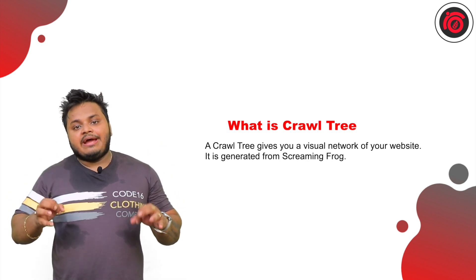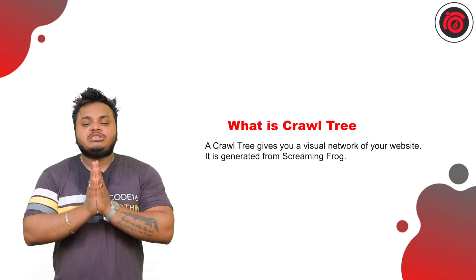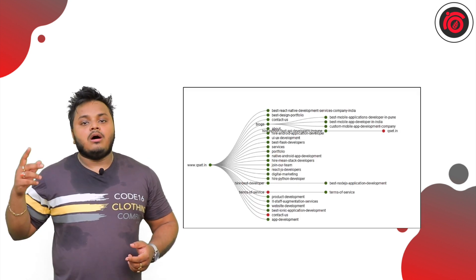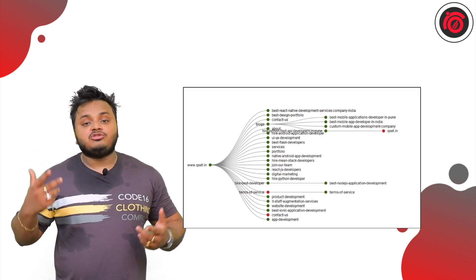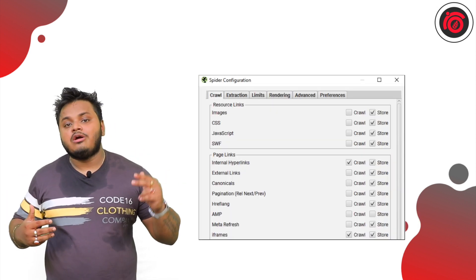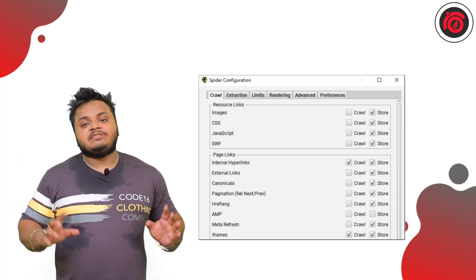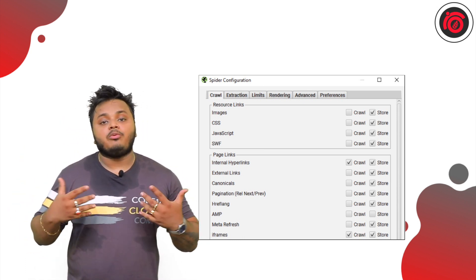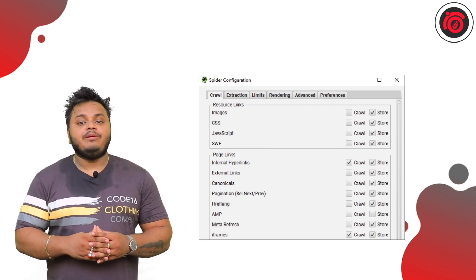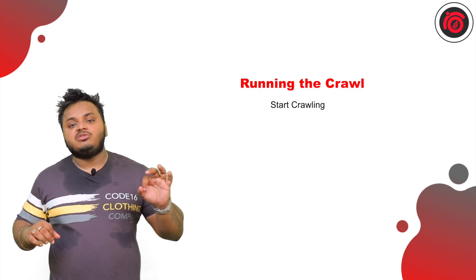In a nutshell, visualizing your entire site's architecture is a crawl tree, which can be seen from recommended software such as Sitebulb. This can also be seen from SEMrush, but my favorite tool is Screaming Frog SEO Spider. I'm going to walk you through some of the steps you can incorporate for identifying the crawl tree benefits and issues as well.